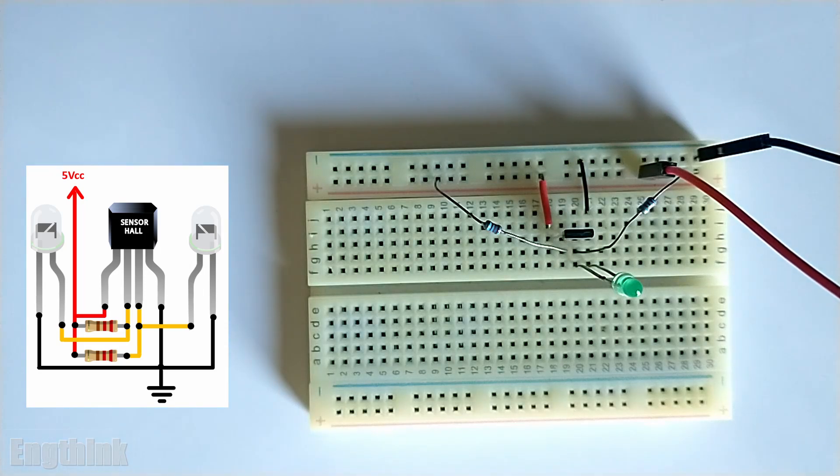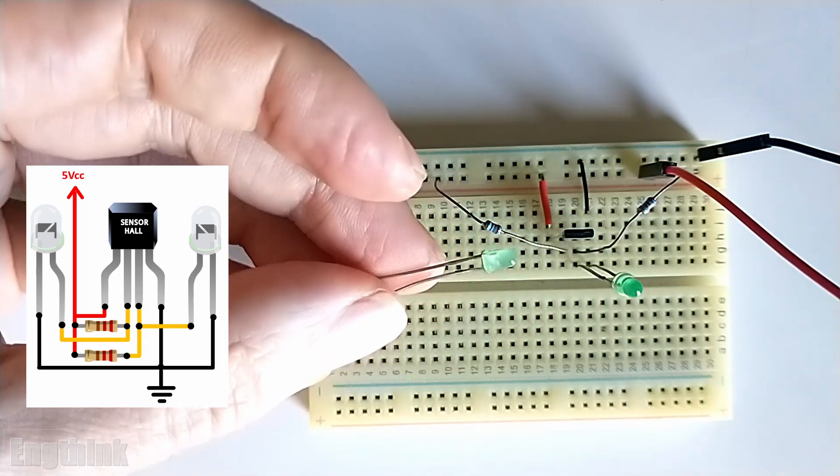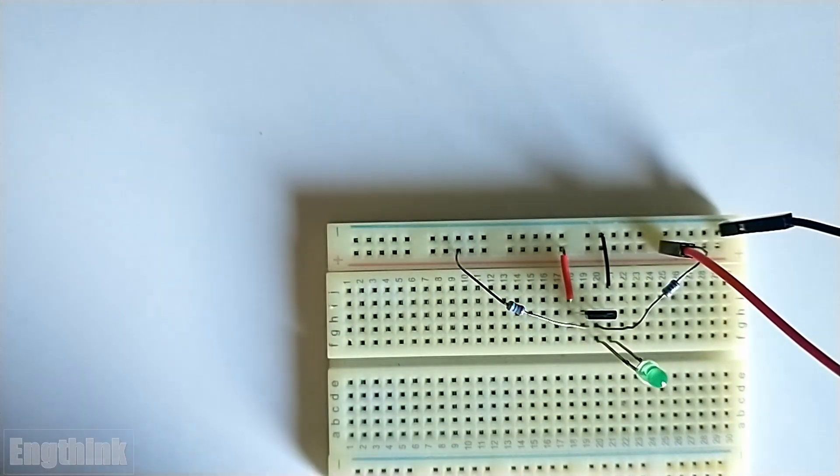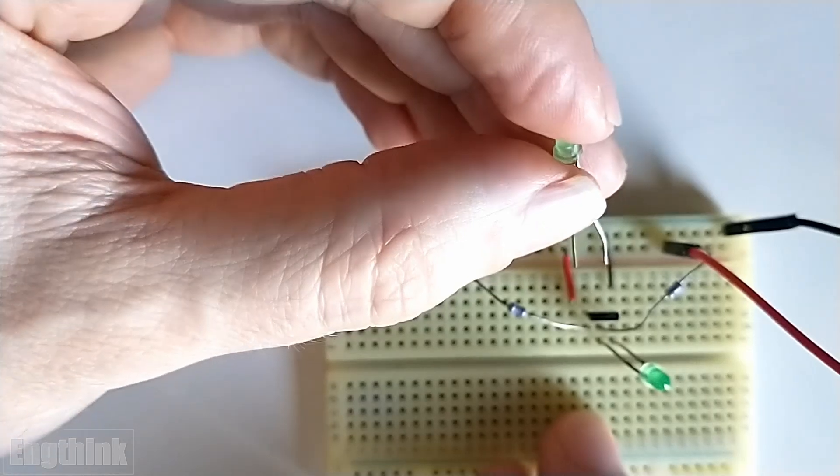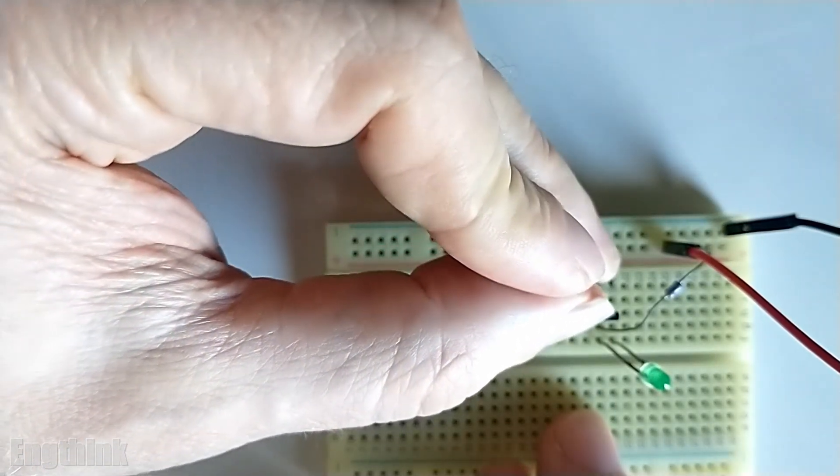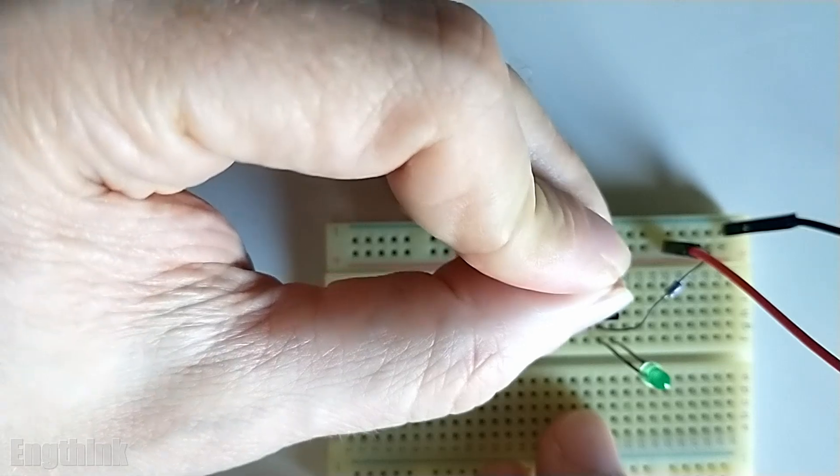The connection of LED is very simple because we already have the resistor in the outputs. So, to add the LED it's just necessary to connect the positive of LED in the output and the negative of LED in the negative of the breadboard. An important reminder is the long pin leg of the LED is the positive of the component and the short leg is the negative of the LED.